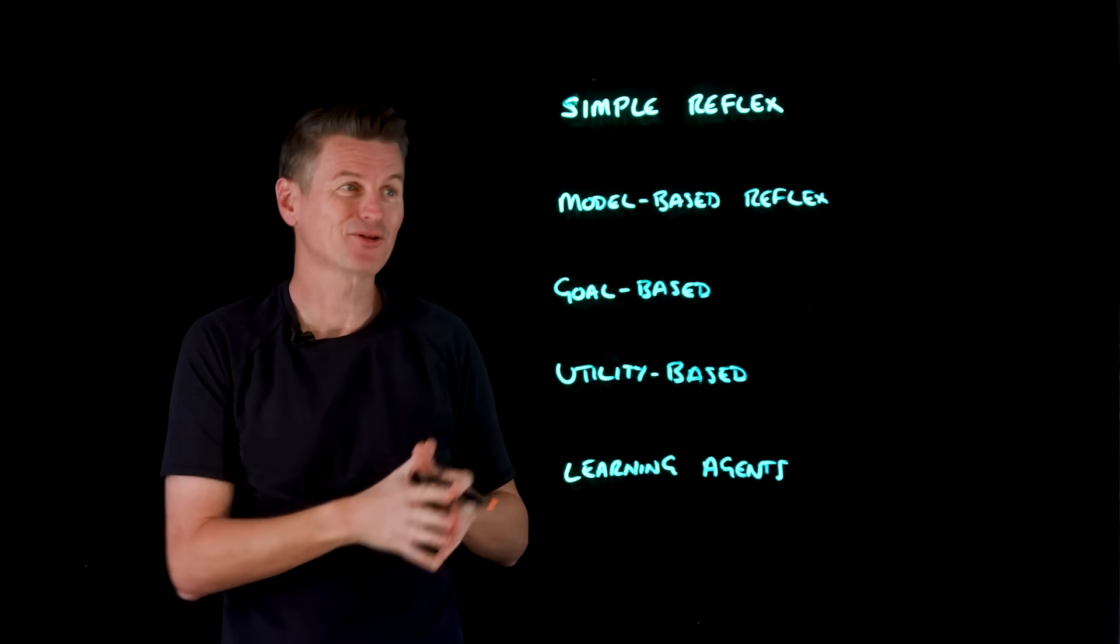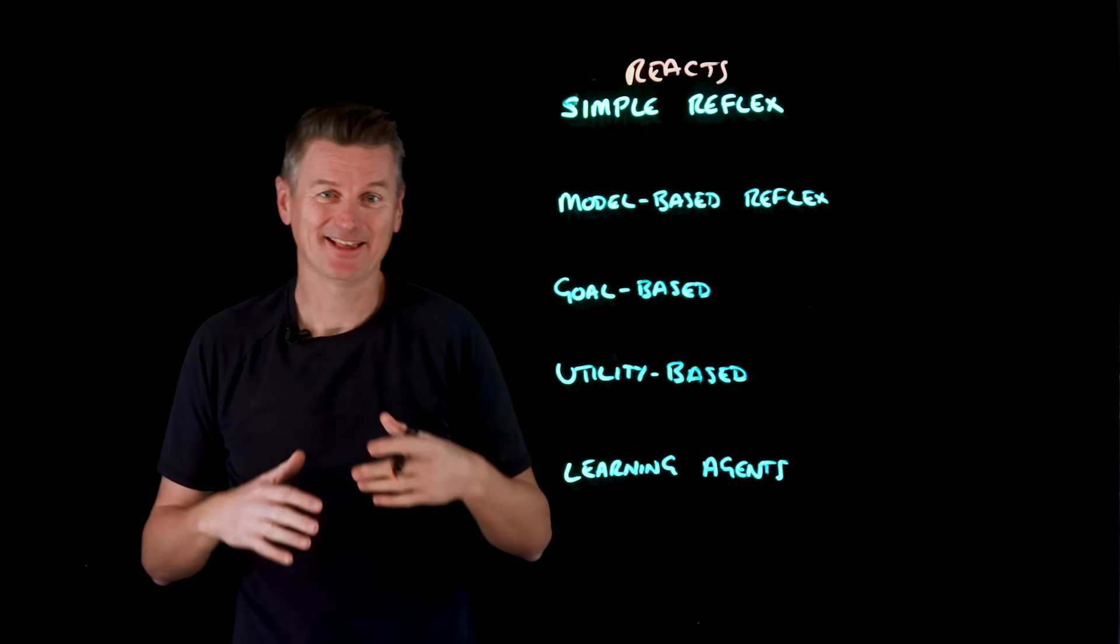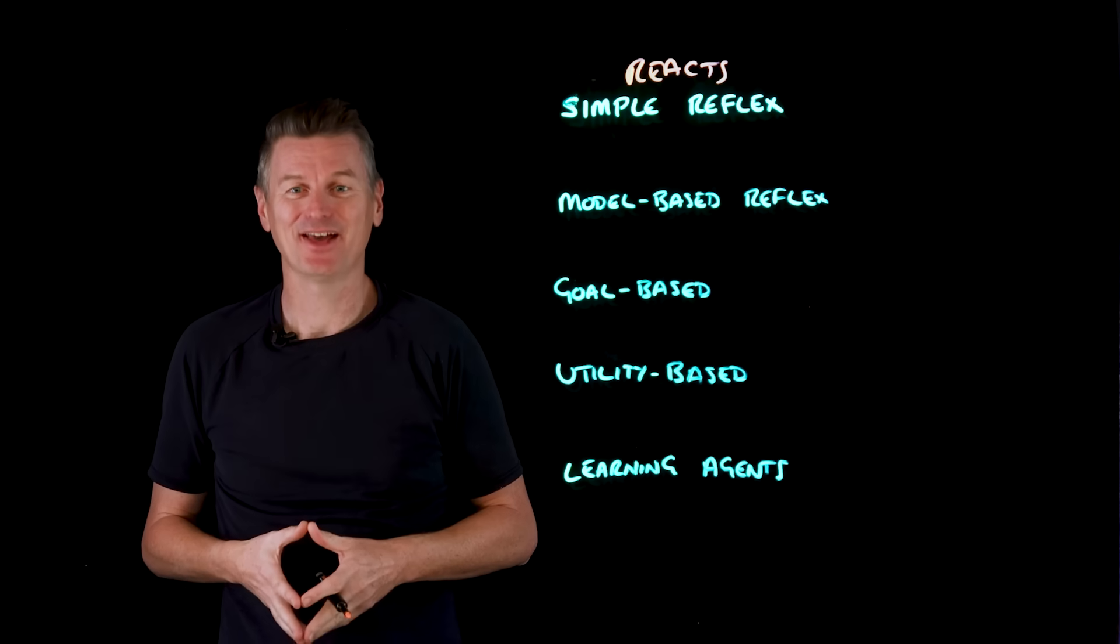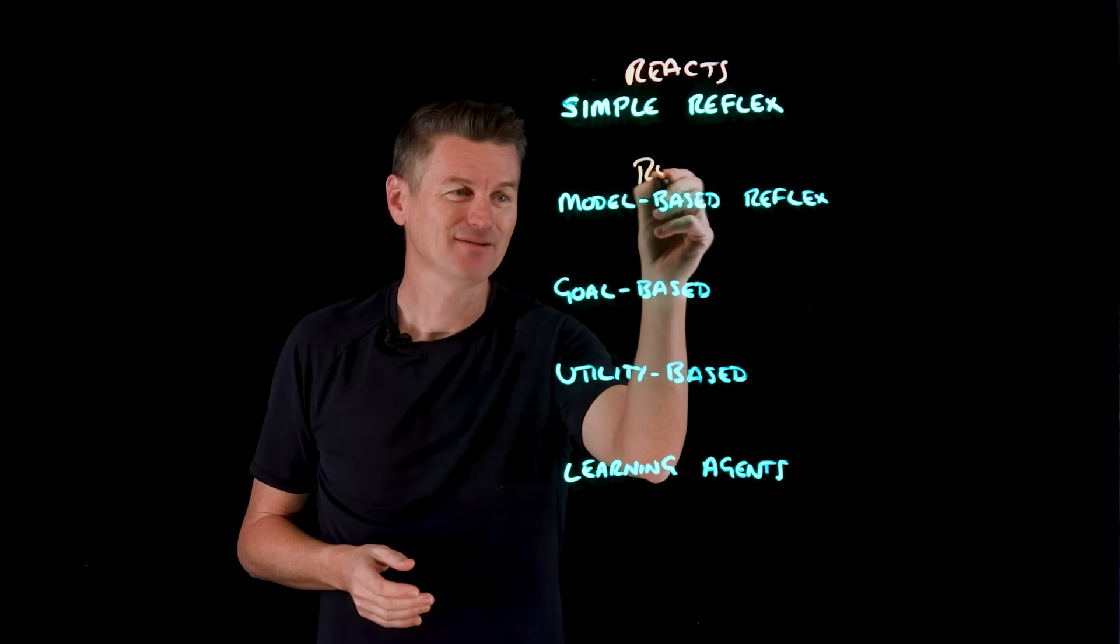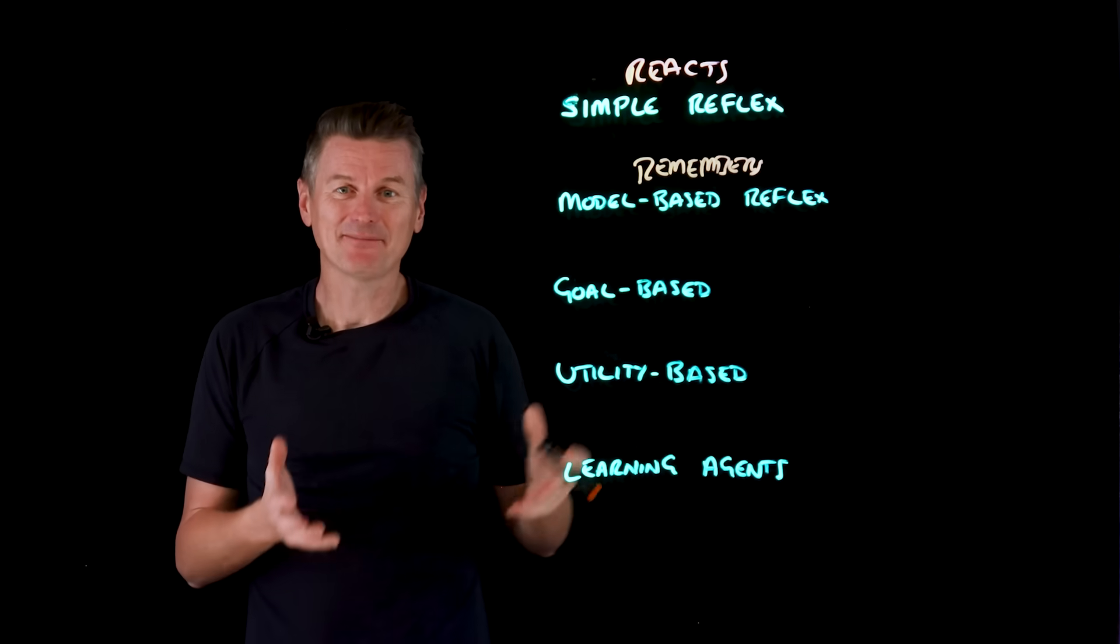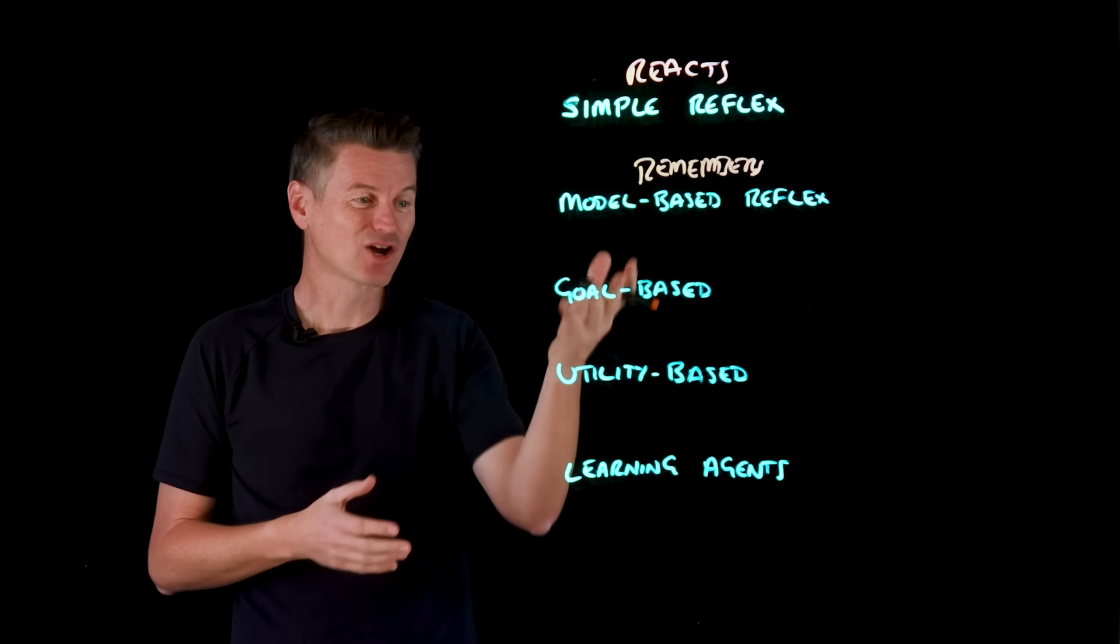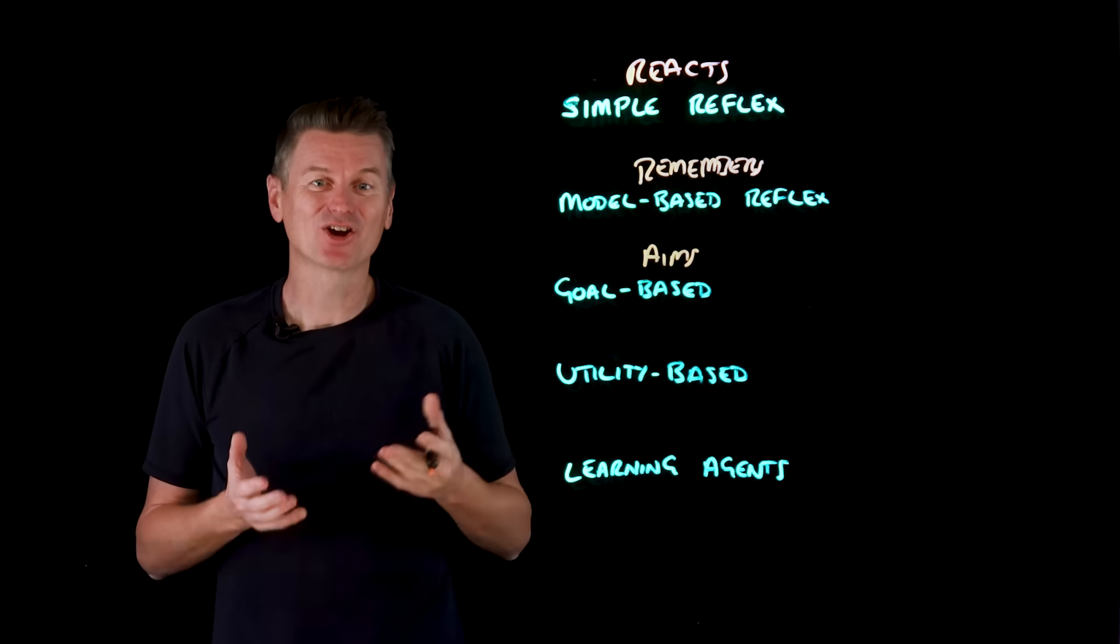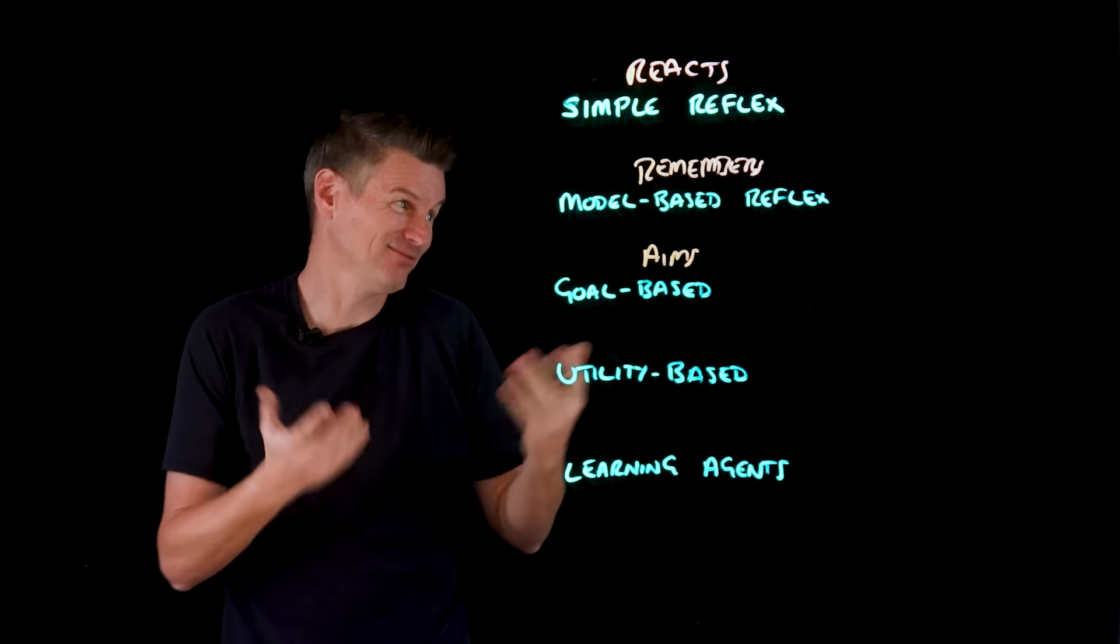So a simple reflex agent that reacts. It's fast to execute, but it has no memory, and it has no understanding of history. A model-based reflex agent, we can really think that the difference there is that it remembers. It does that by tracking state over time, it doesn't plan, it's still reactive. A goal-based model, that aims. It aims by using goal-directed behavior, but any way of meeting that goal will do.